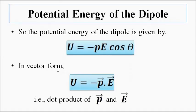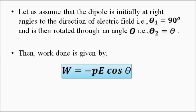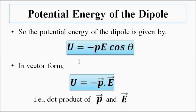We know that the potential energy of the dipole is the negative of this work done — as already discussed in the video on electric potential energy and electric potential. Therefore, the potential energy of the dipole is U = −(−pE cos theta) = −pE cos theta. This can also be written as the dot product: U = −p⃗ · E⃗. This is the potential energy of the electric dipole in a uniform electric field.